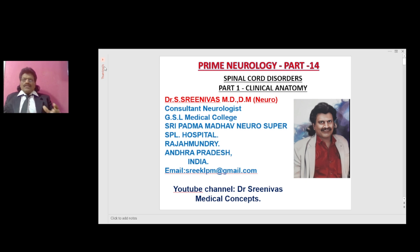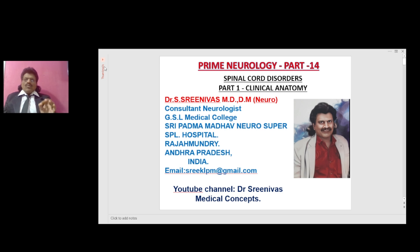We are continuing with a series of lectures of Prime Neurology. As the name suggests, Prime Neurology contains all the essential elements of Neurology. There are 50 episodes of Prime Neurology, and if one listens to all these 50 episodes, one would acquire a good knowledge of Neurology. Right now we are on Prime Neurology, Part 14, Spinal Cord Disorders, Part 1, Clinical Anatomy.